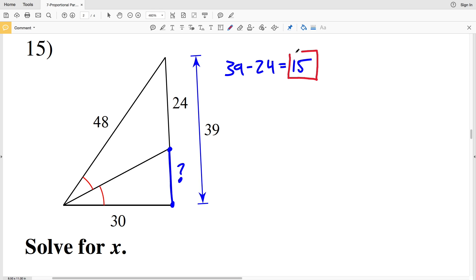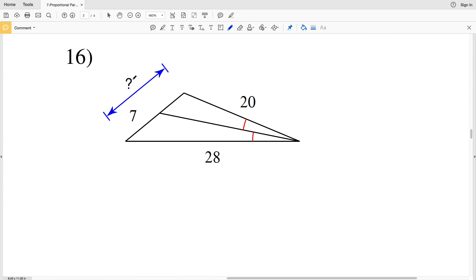So 39 minus 24 equals 15. So 15 is our missing length in number 15. In 15 we didn't need to use any of our theorems. And number 16, this total length is the indicated length that we're missing. So first let's solve for this smaller portion. We'll call this X. So 28 over 20 is proportional to 7 over X, and that's because of the angle bisector theorem. So 28 times X will equal 20 times 7 when we cross multiply.